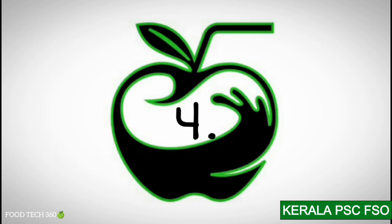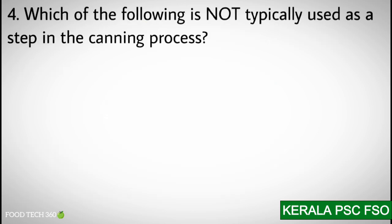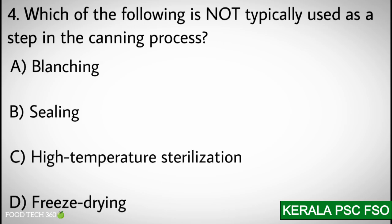Q4. Which of the following is not typically used as a step in the canning process? Options: A) Blanching, B) Sealing, C) High temperature sterilization, D) Freeze drying.